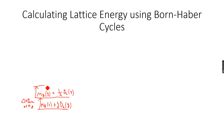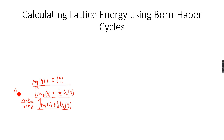Then we go up again — we give energy and we atomize the oxygen. So we get Mg gas plus O gas. This gives us ΔH°atm of O2 gas.